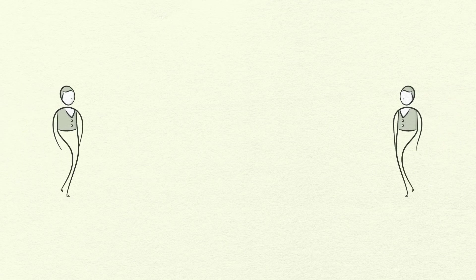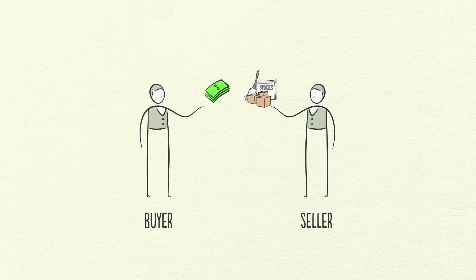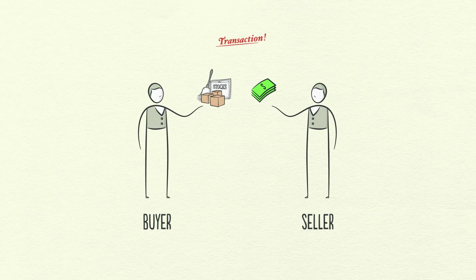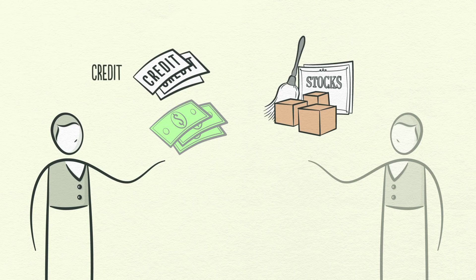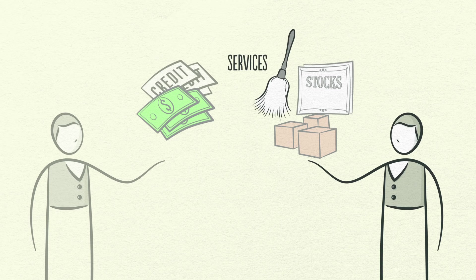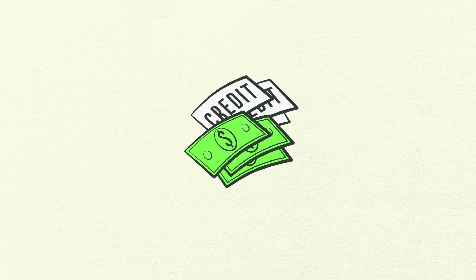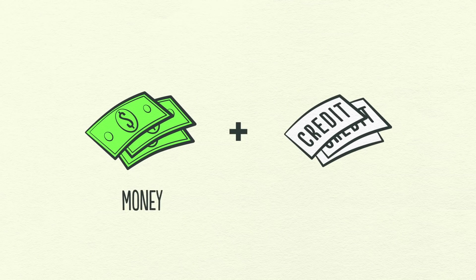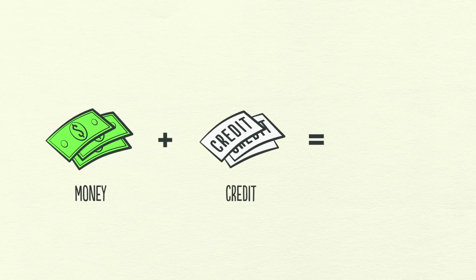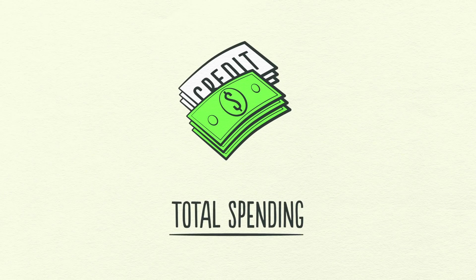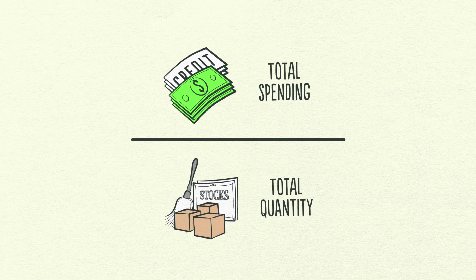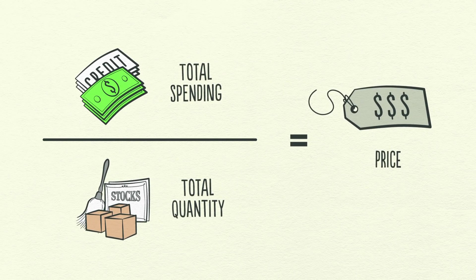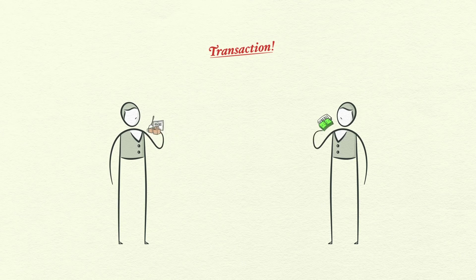An economy is simply the sum of the transactions that make it up, and a transaction is a very simple thing. Every time you buy something, you create a transaction. Each transaction consists of a buyer exchanging money or credit with a seller for goods, services, or financial assets. Credit spends just like money, so adding together the money spent and the amount of credit spent, you can know the total spending. The total amount of spending drives the economy. If you divide the amount spent by the quantity sold, you get the price. That's a transaction — it's the building block of the economic machine.